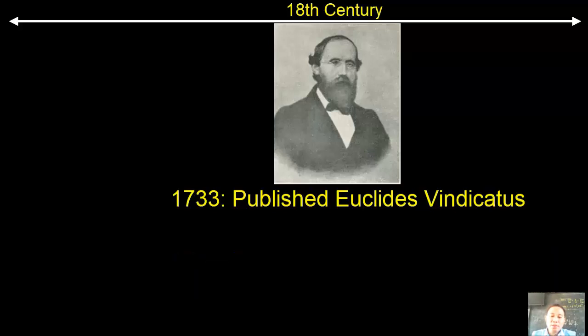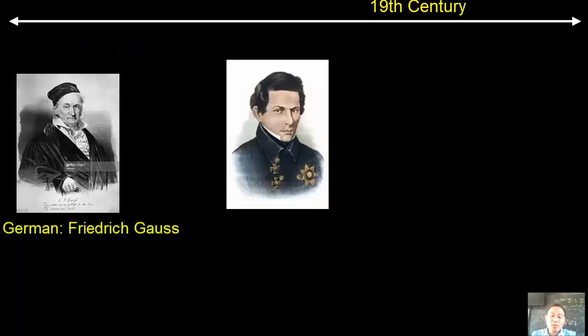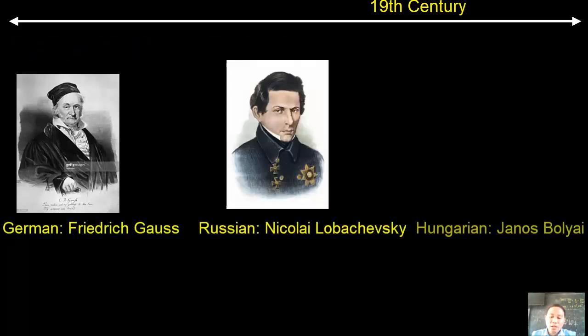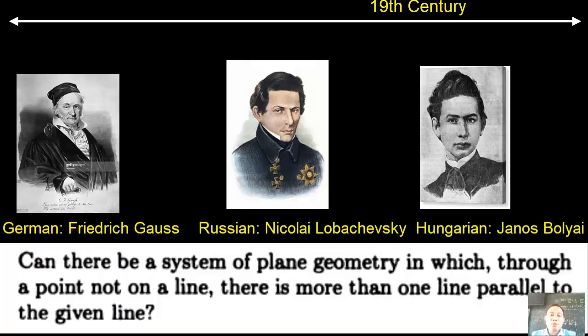Saccheri's approach was revised by four people. First, three of them started by questioning: 1810, Ferdinand Gauss, a Russian; 1829, Nikolai Lobachevsky; and the third from Hungary, Hungarian Army, János Bolyai. They start by questioning, can there be a system of plane geometry in which through a point not on a line, there is more than one line parallel to the given line? All of them, even though they were in different places, came to the surprising conclusion.